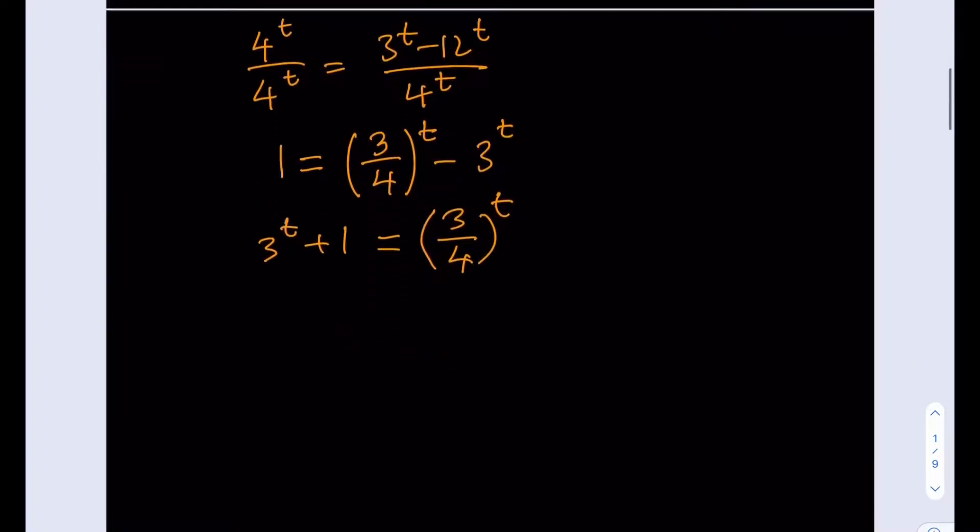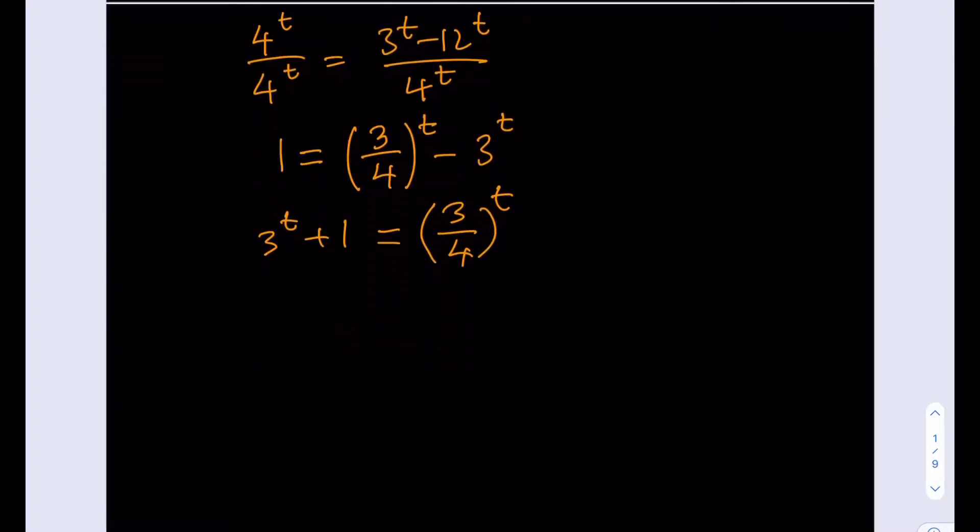Okay? Now, this is good because, as we know, that 3 fourths to the power t is a decreasing function because the base is less than 1, right? And this is an increasing function because the base is greater than 1. Okay?